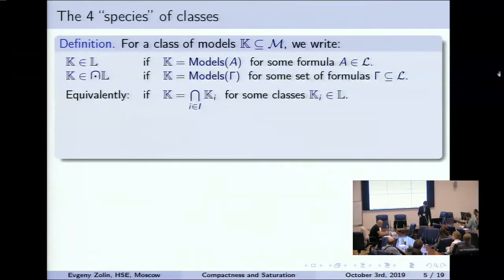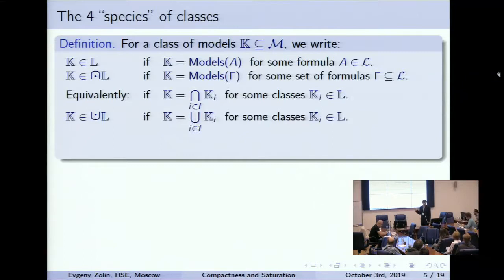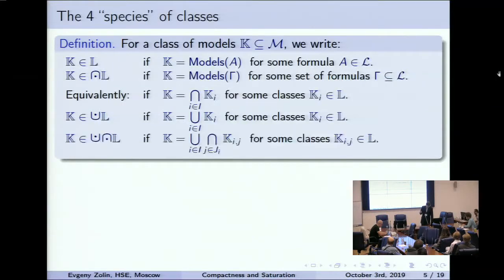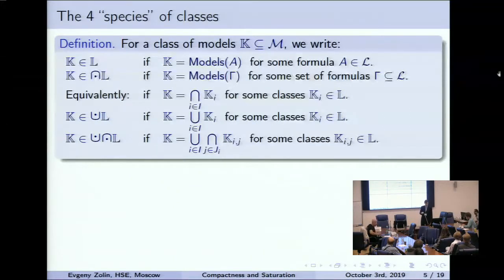Since we have intersection, it is natural to take union. I will call these classes coaxiomatizable. And of course we can take unions of intersections of classes from the first line, and perhaps we can go further, but fortunately we don't need to do this.